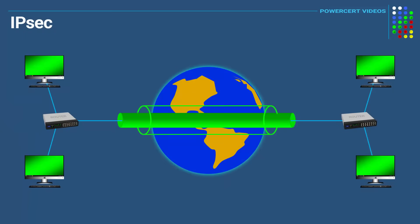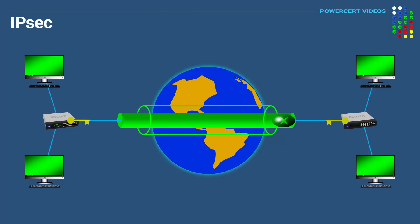In order to use IPsec, both sender and receiver must share a public or private key. This key is what locks and unlocks the encrypted data as it travels across a network, ensuring the data cannot be read or tampered with. When one site sends data to the other, it uses the key to encrypt — or lock — the data. Then as the data travels across the internet, the receiver uses the key to unlock or decrypt the data so it can be read.